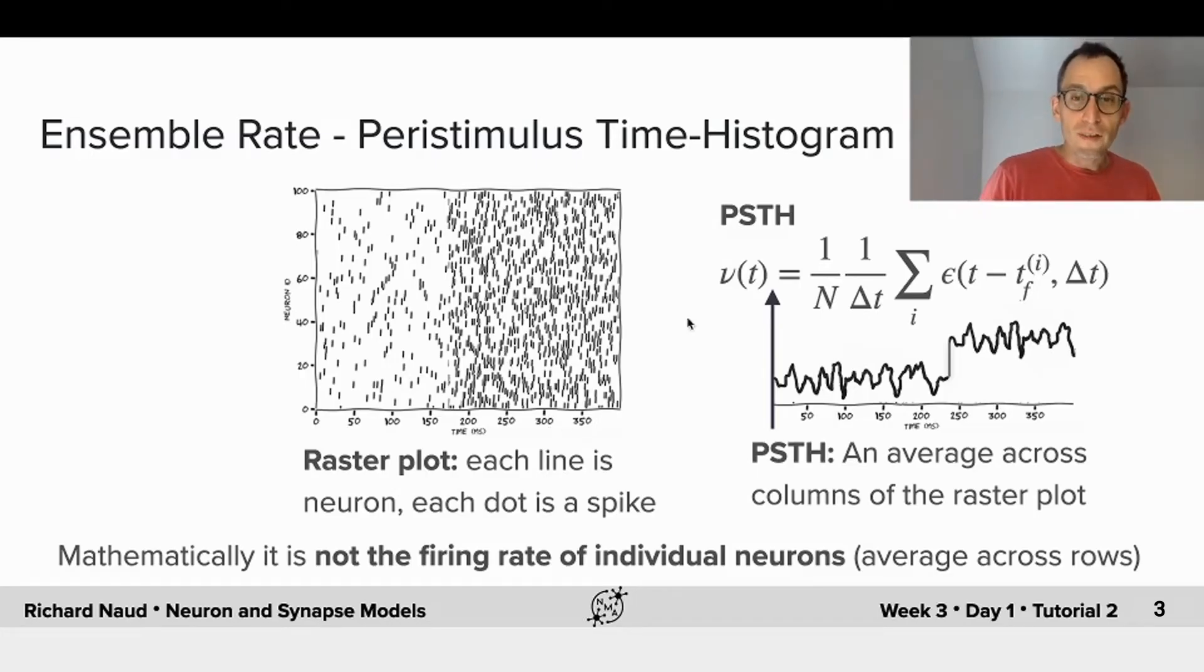So from this raster plot, the idea of the ensemble rate, or PSTH for peristimulus time histogram, is to take this average across column of all the spikes combined through the smoothing function here that I called epsilon. And if you do this, you will get something like this, where the ensemble rate is low. And then at this time here, we suddenly have an increase in the ensemble rate. So the ensemble rate will be representing the relative number of spikes per time bin.